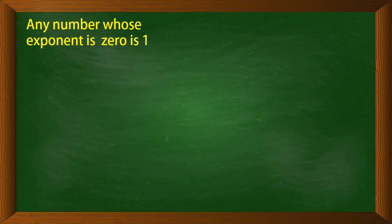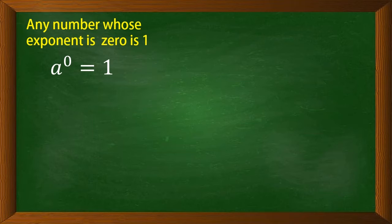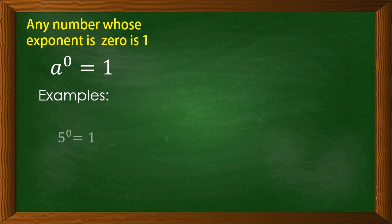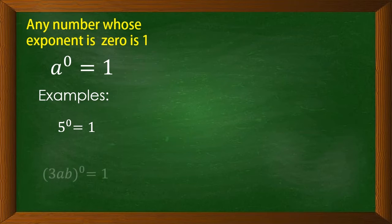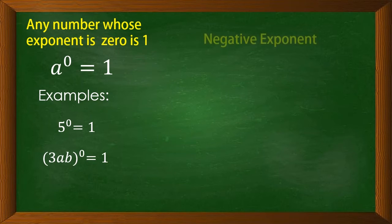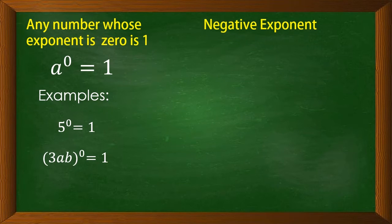Any number whose exponent is 0 is 1. a raised to 0 equals 1. For example, 5 raised to 0 equals 1. Same as (3ab) raised to 0, which is also 1.